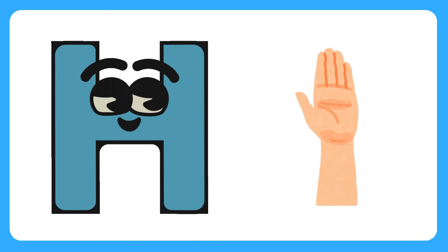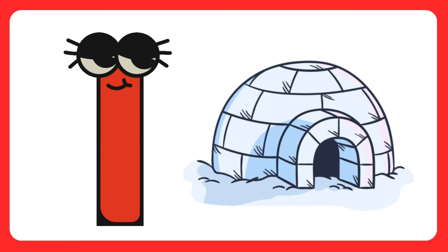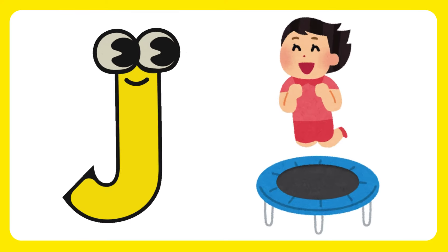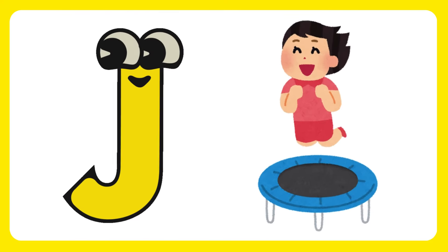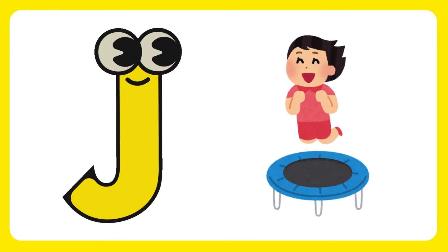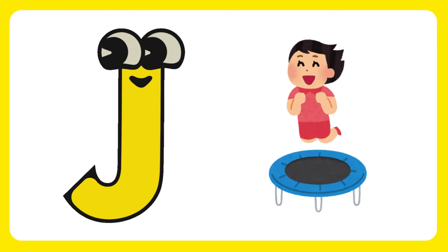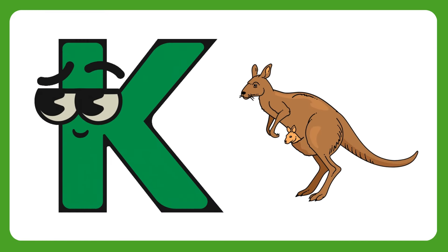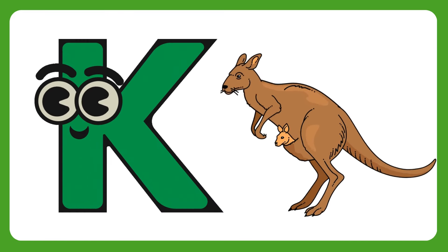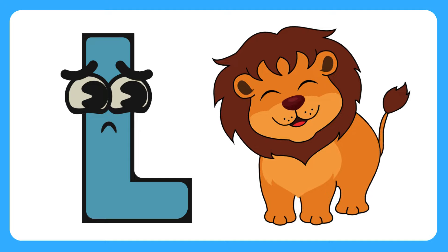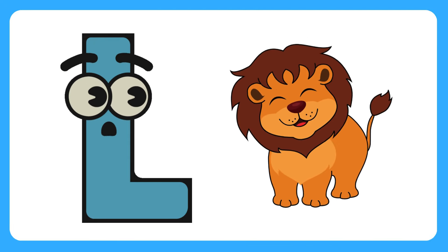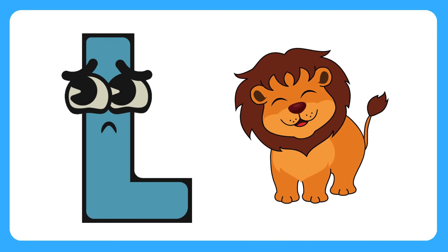I is for igloo, i-i-igloo. J is for jump, j-j-jump. K is for kangaroo, k-k-kangaroo. L is for lion, l-l-lion.